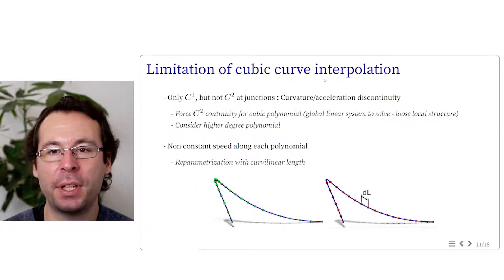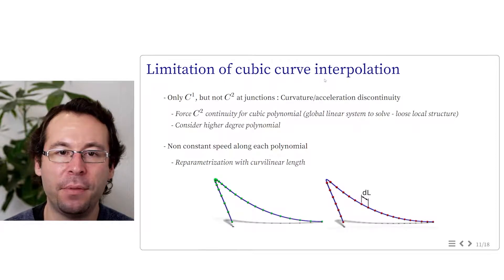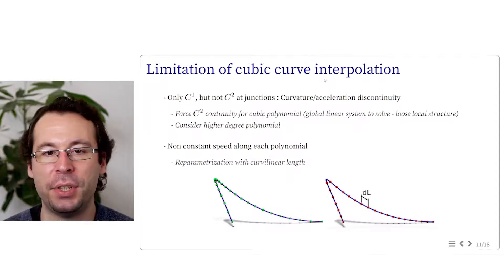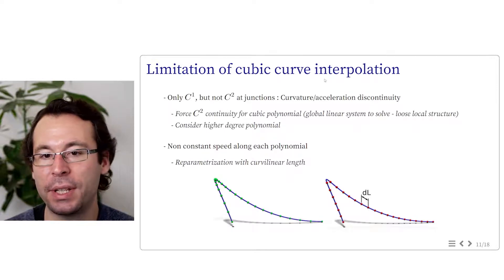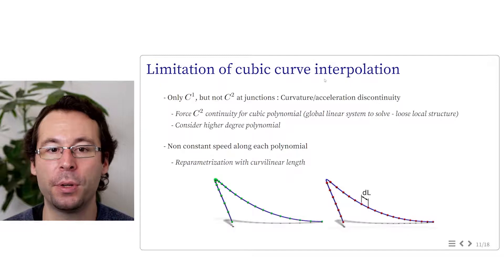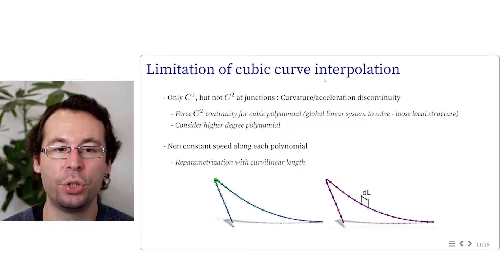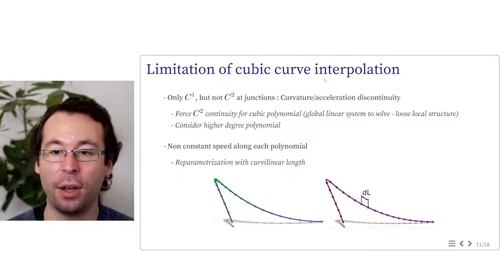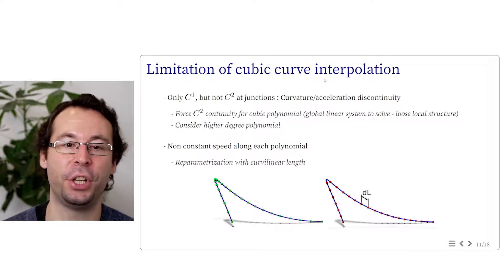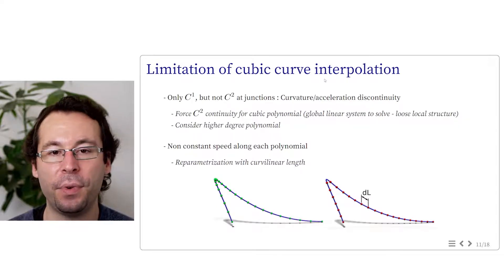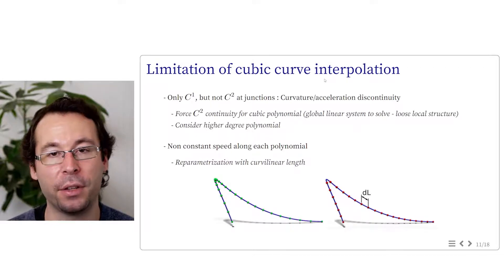Using this cubic curve interpolation works well, but it's not perfect. First you only interpolate derivatives, which means that the curve is C1 at the junction between samples and not C2. So there is curvature and acceleration discontinuity. We could force C2 continuity using cubic polynomials, but in this case we would need to solve a global linear system and we would lose the local structure. With Hermit curve, a modification on one key position only influences direct neighbors and not the entire trajectory. If we wish to have a C2 trajectory with local structure, then we would need to do the computation with higher degree polynomials.